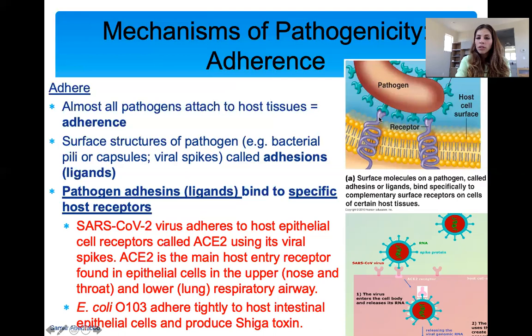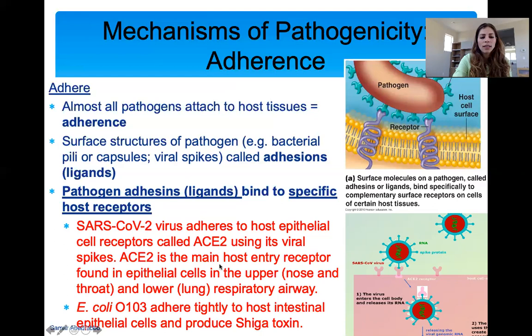You see the ACE2 receptor on heart cells, lung cells, kidney cells, and other cells. But recent research says we don't know why the virus is not attaching to heart cells, which is a good thing — but we still don't know enough about it.